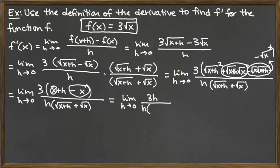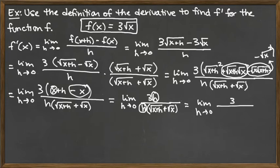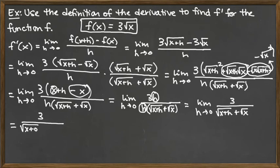The top is now simply 3h and the bottom is h times the conjugate factor, which happens to look ugly but is not problematic. We can now cancel the h on top with the h on the bottom, leaving us with the limit as h approaches 0 of 3 over the square root of x plus h plus the square root of x. Taking that limit by plugging in 0 for h gives 3 over the square root of x plus zero plus the square root of x, which is 3 over 2 times the square root of x.